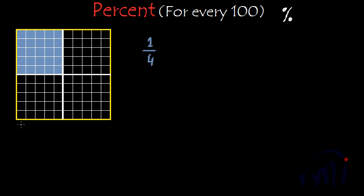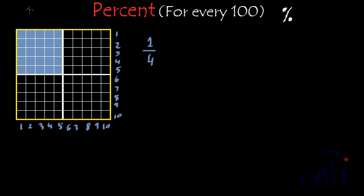I can count the rows: each row has ten parts and there are ten rows, so ten multiplied by ten is a hundred. Now counting the blue shaded parts you are eating — that comes to 25 parts out of the hundred.